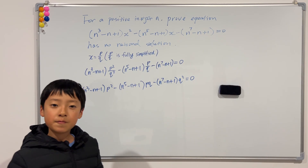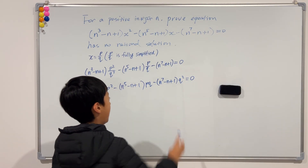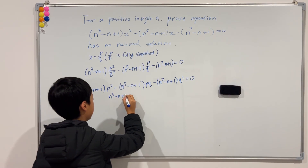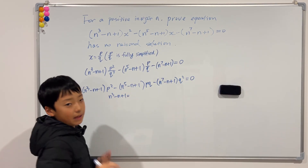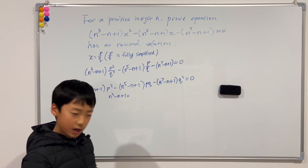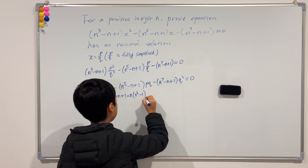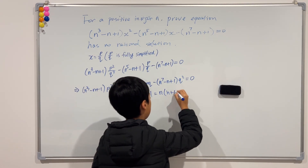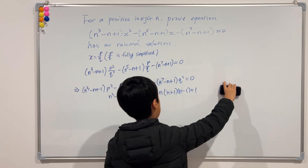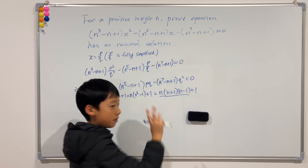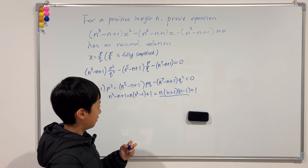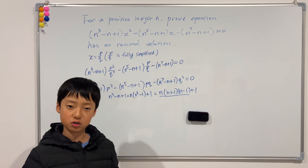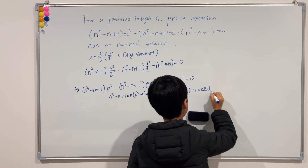Now, I'm going to explain how all of these coefficients are actually odd. Let's first look at the first one: n cubed minus n plus 1. I'm going to factor out an n from the first two terms, giving n times n squared minus 1 plus 1, and we can factor this as n times n plus 1 times n minus 1, plus 1. We see that this is a product of three consecutive positive integers, which means it has to be even, and an even number plus 1 has to be odd. So we know that n cubed minus n plus 1 is odd.